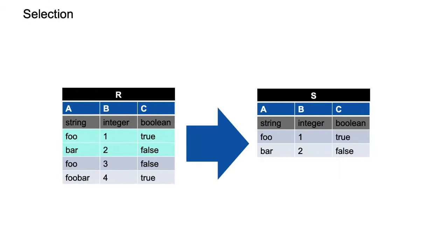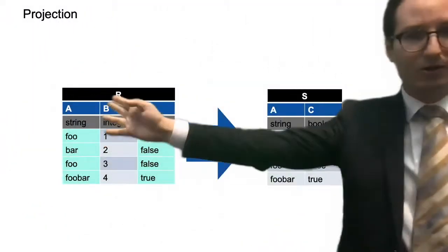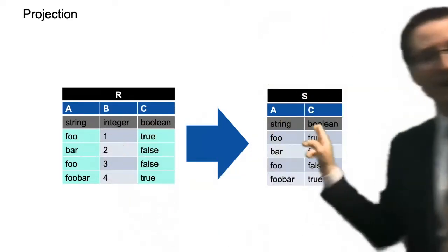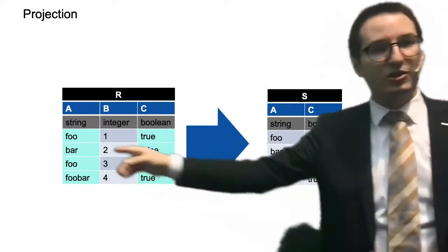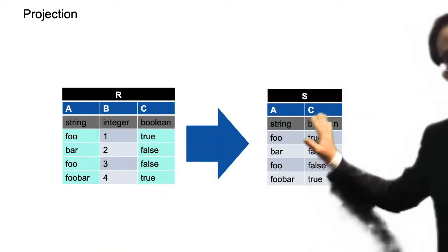A selection means you select a subset of the set of maps — you pick some rows but not all. This is based on a predicate that is either true or false on every row, and you only keep the rows for which the predicate is true. For example, the predicate could be that B is less than or equal to 2. A projection is similar but vertical: you say you want to keep column A and column C, and drop column B. Mathematically, you just restrict the domain of definition of the maps.